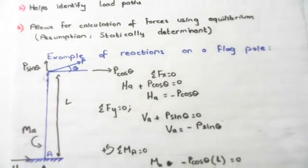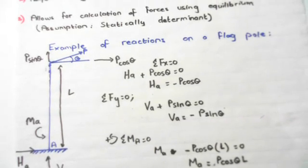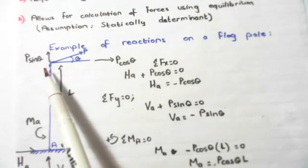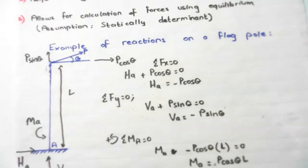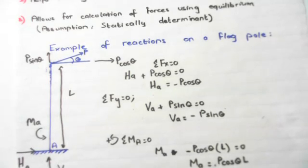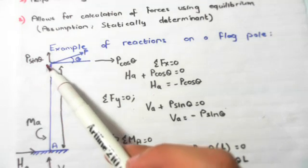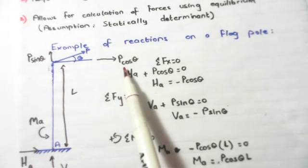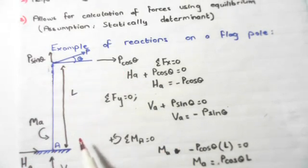Next, we work out the moment. Taking moments about point A equal to zero: HA and VA have no lever arm about point A since they pass through it, and P sin theta is also in line of sight with point A, so it contributes no moment. Remember, a moment equals force times perpendicular distance. P sin theta has no perpendicular distance to point A, and neither do HA or VA. However, P cos theta has a perpendicular distance of L.